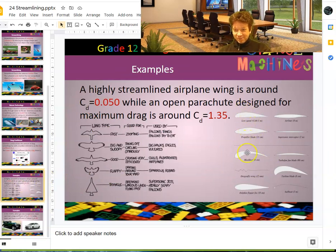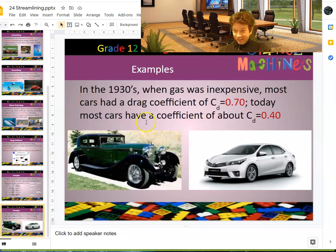These are just a couple examples of airfoils. A highly streamlined airplane will have a wing with a drag coefficient this small. Whereas if you were skydiving and you opened a parachute, you would have a drag coefficient this large. You can also see that cars over the decades have changed quite a bit. Obviously, this is a lot more streamlined than this. In fact, this has about a drag coefficient of 0.7, whereas this is almost half of that at 0.4.